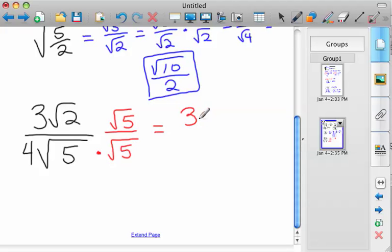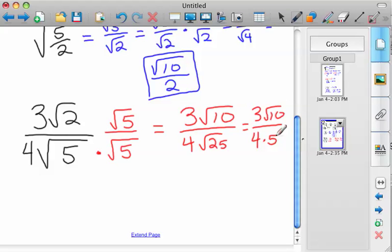So on top, you'd have 3 root 10, because 5 times 2 is 10, over 4 root 25. Well, root 25 is 5, so you'd have 3 root 10 over 4 times 5. Well, 4 times 5 is 20, so 3 root 10 over 20. Then you have a rationalized denominator in this case as well.